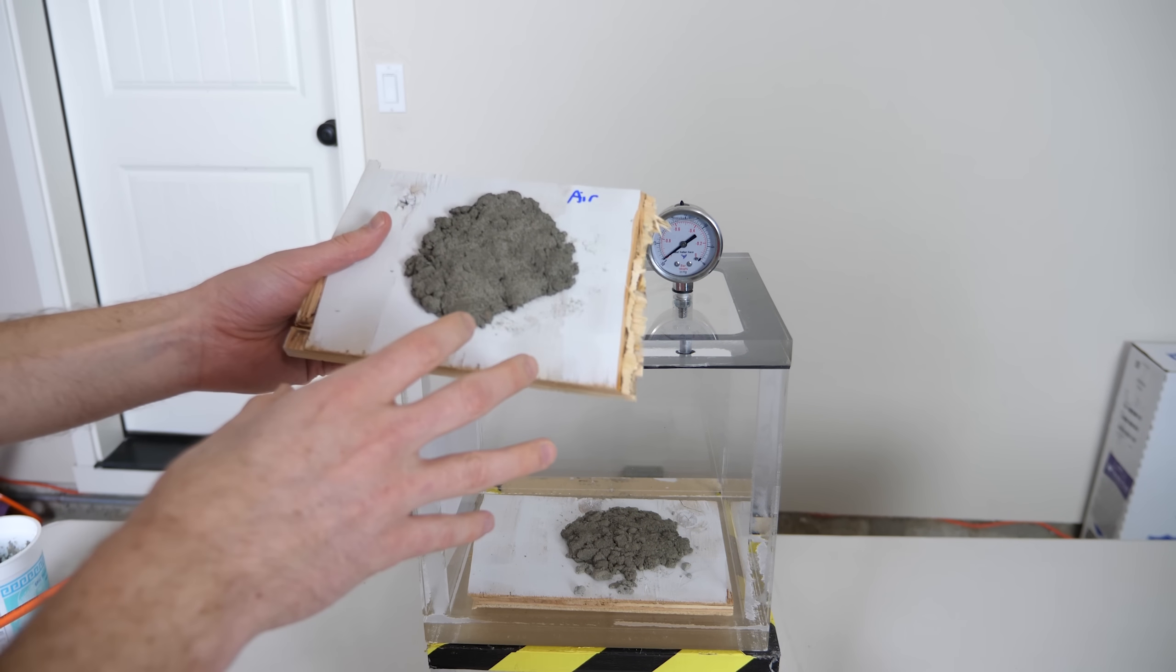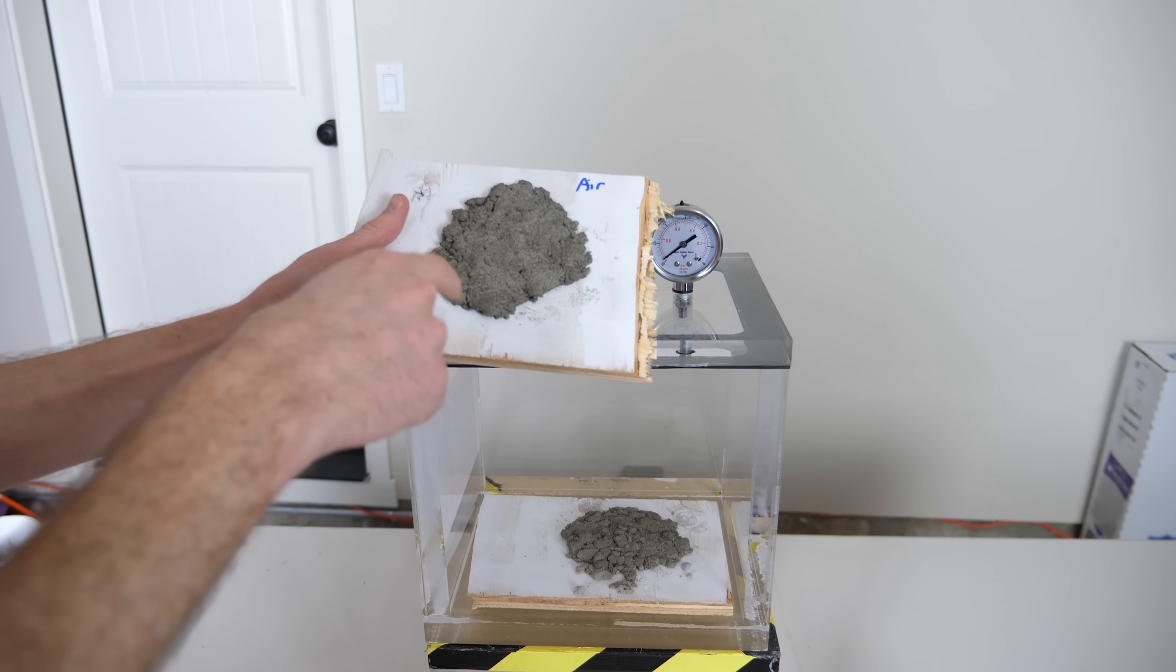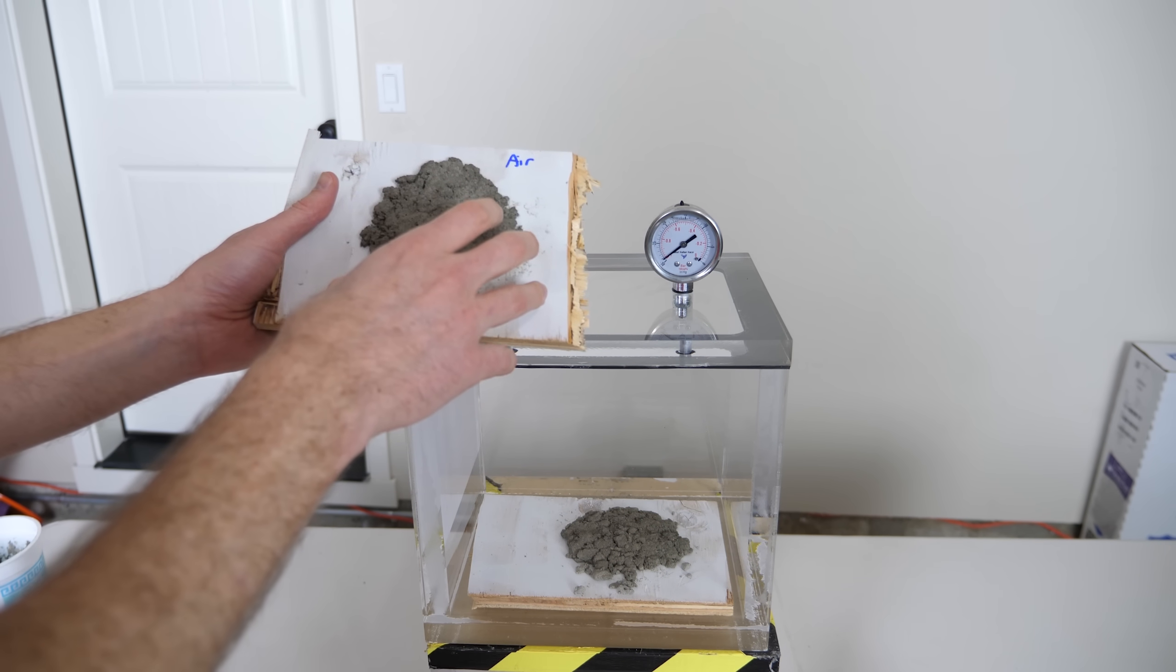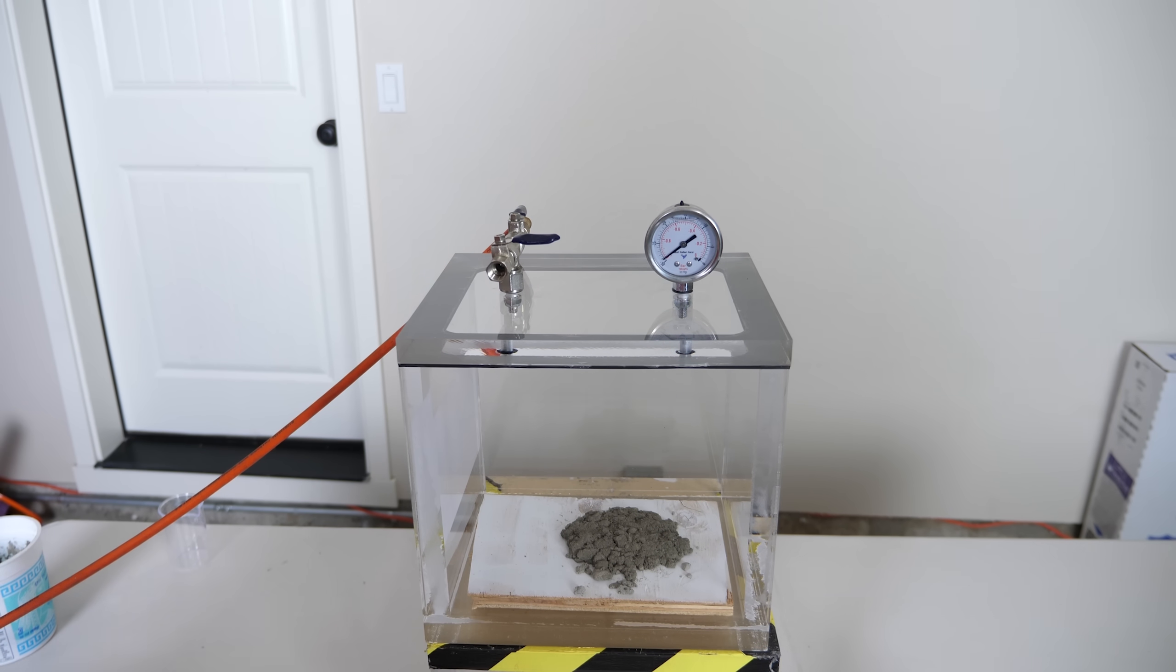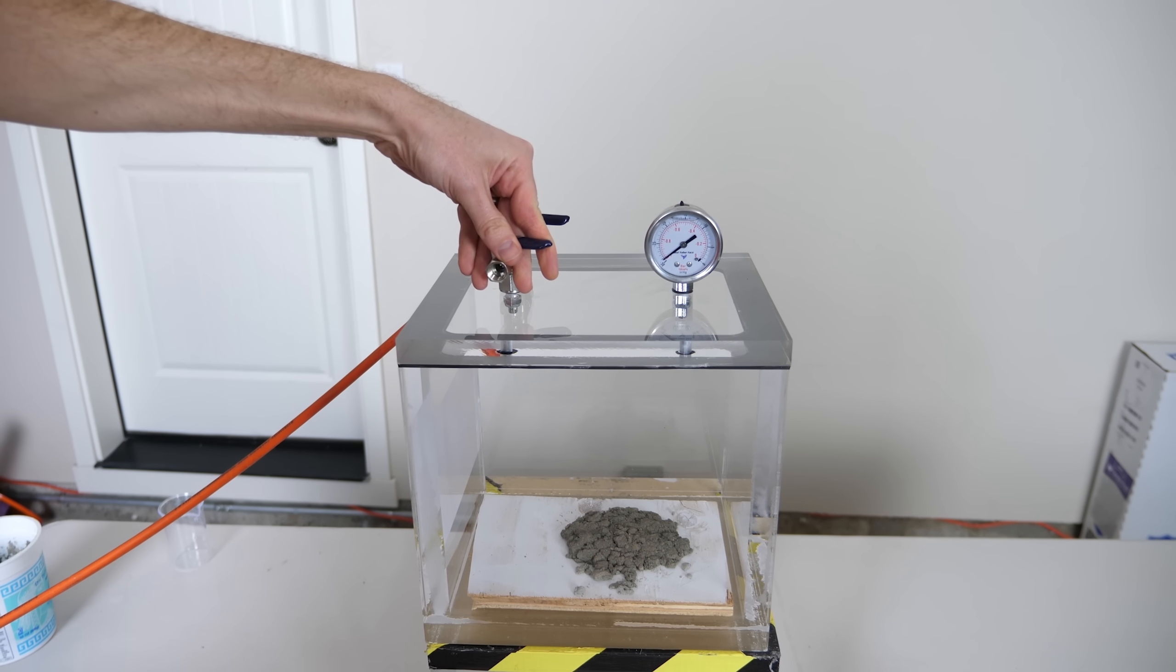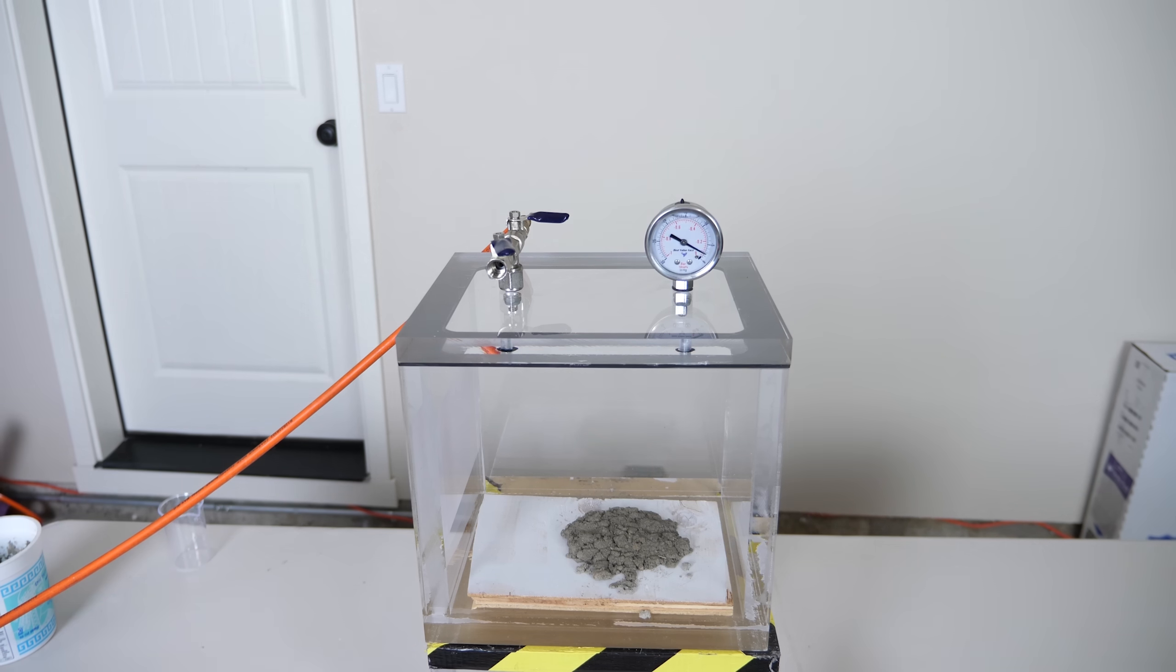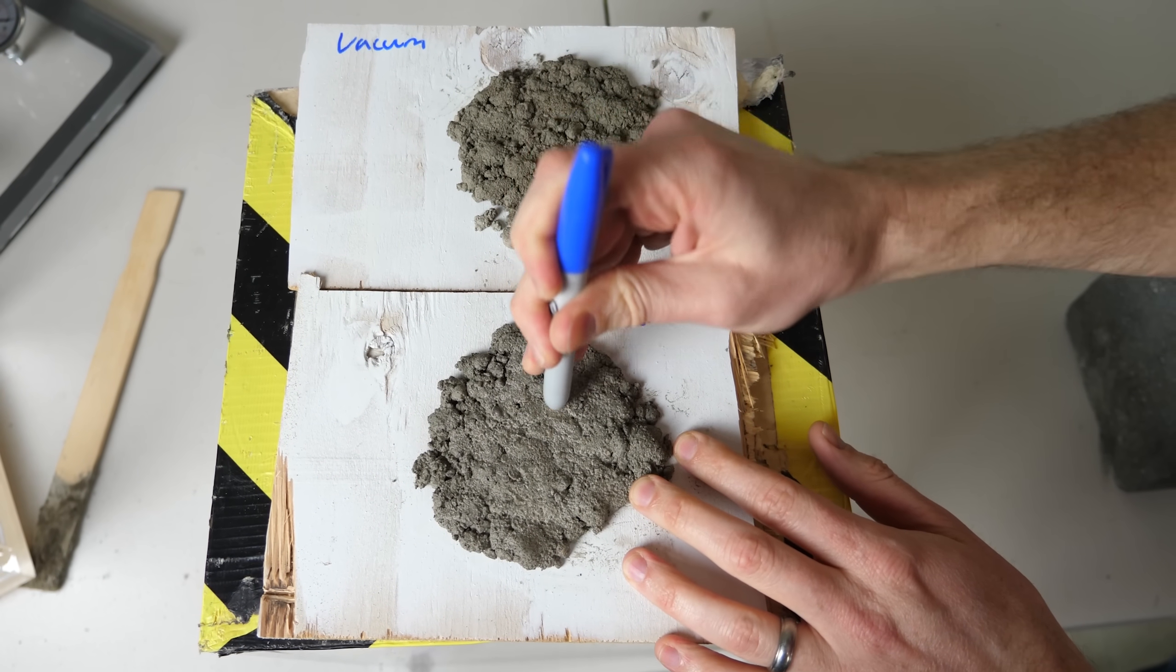So it's been a few hours now. This is quick setting cement, so it should set pretty quickly. It's definitely not full strength yet, but it should be good enough to compare the two. So let's compare our cement drying in air versus in a vacuum chamber. Let's let the air back in. Three, two, one.